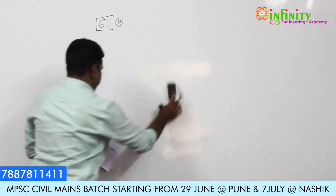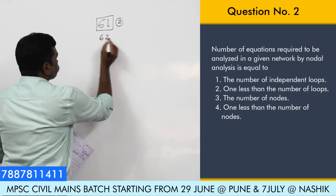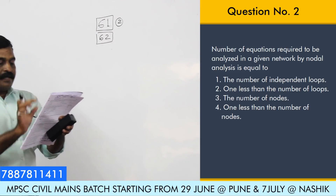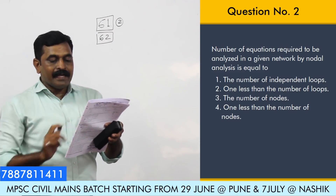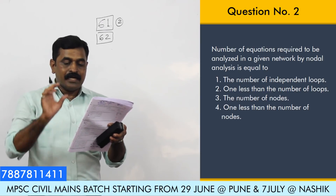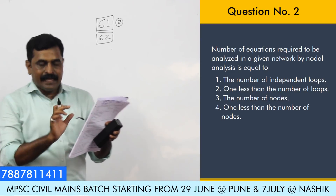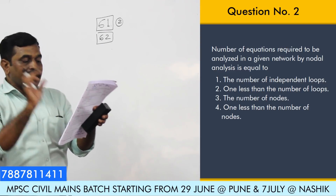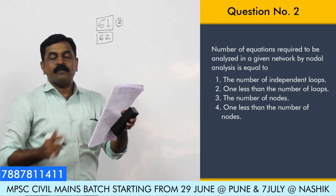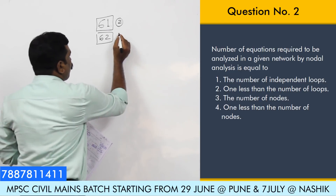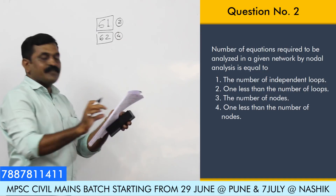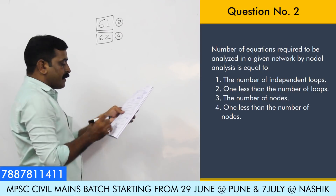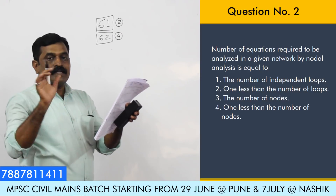Now question number 62: the number of equations required to analyze a given network by nodal analysis. For nodal analysis, the number of equations should always be one less than the number of nodes. The option is 4. This is a conceptual part — one less than the number of nodes.